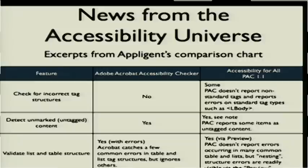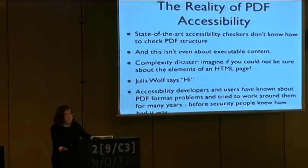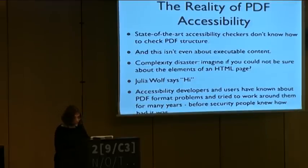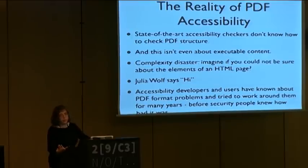Because, you know, accessibility people don't talk to security people, and accessibility people don't think that not being able to parse a document consistently is a big issue. They don't have expectations like that. So they don't know how to check PDF structure. And we didn't even get into executable content yet. The best people don't know how to find out what's in your PDF document. And they've been at this for many, many years. They've been aware of this. They just didn't tell us.